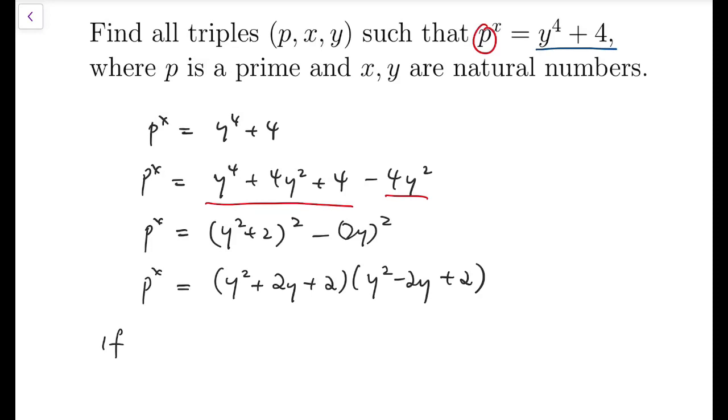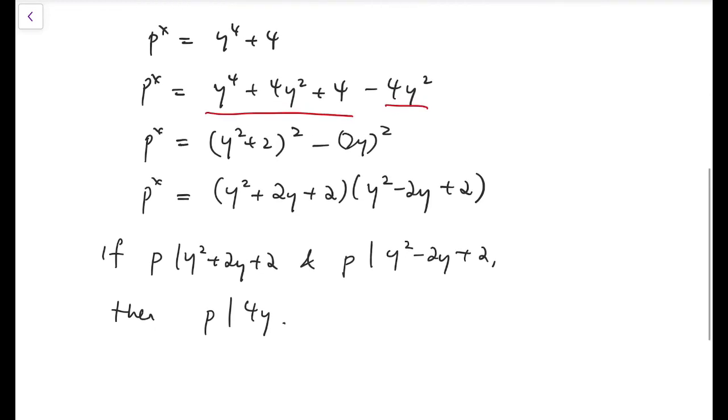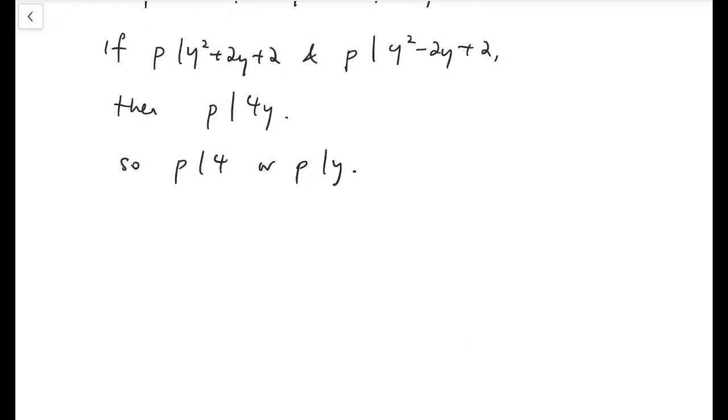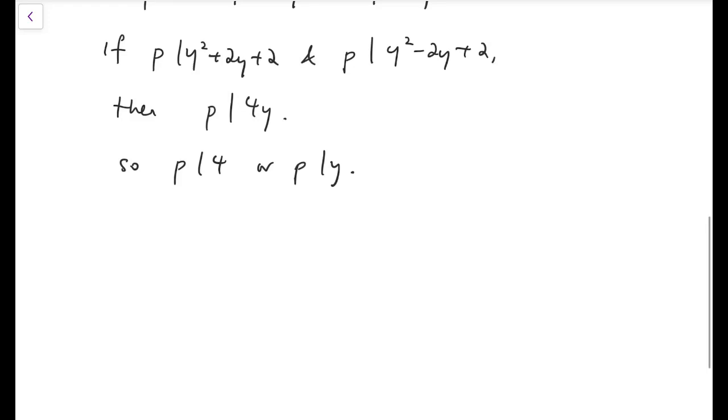Now, the first case is that if p divides both y squared plus 2y plus 2, and p divides y squared minus 2y plus 2, then I will take the difference of the two dividends, which means p divides 4y. Then because p is a prime, that means p will either divide 4, or p would divide y. The case that p divides 4 is very easy, because the only possible case for that to happen is that p is 2. So I will leave that aside and take a look at the case that p divides y.